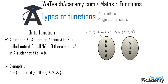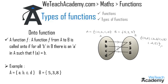Now let us map the elements: a with 5, b with 3, c with 8, and d with 5. We get the ordered pairs as (a,5), (b,3), (c,8), and (d,5). In an onto function, all the elements of set B are mapped with elements from set A.